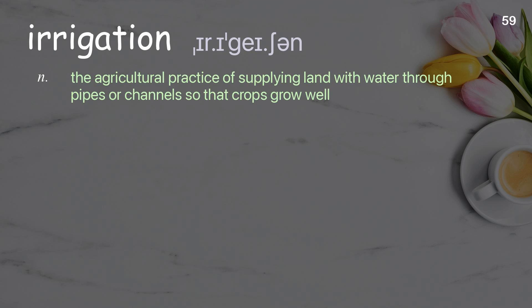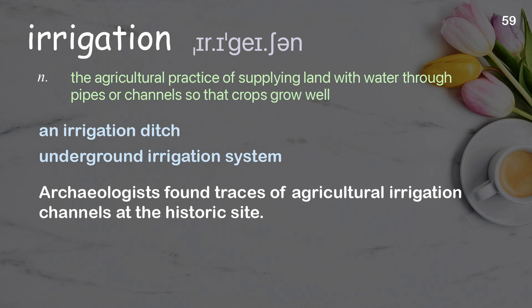Irrigation. The agricultural practice of supplying land with water through pipes or channels so that crops grow well. Examples: an irrigation ditch; underground irrigation system. Archaeologists found traces of agricultural irrigation channels at the historic site.